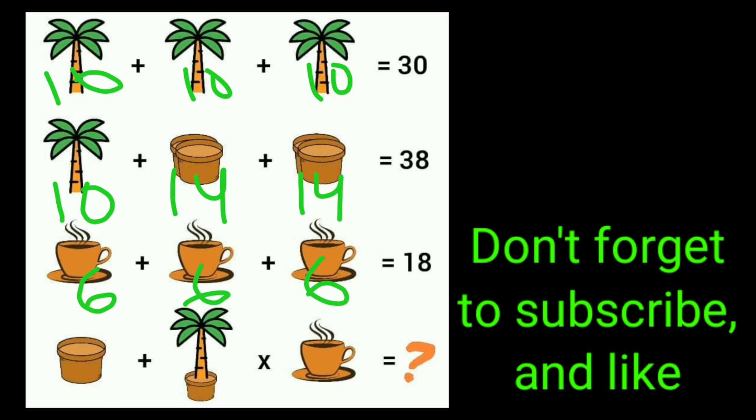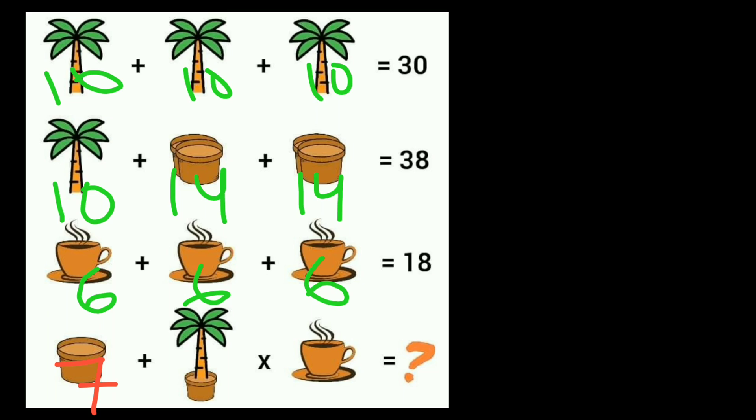So here we can write in the last equation, the value of one flower pot is 7. Let's write 7 plus the value of the tree is 10, and one flower pot is also here. You can see the flower pot on the downside. So tree plus flower pot is 10 plus 7 equals 17. We have to write here 17 times the value of the tea set is 6. When you solve this equation, we get the answer: 17 times 6 equals 102, plus 7 is 109.